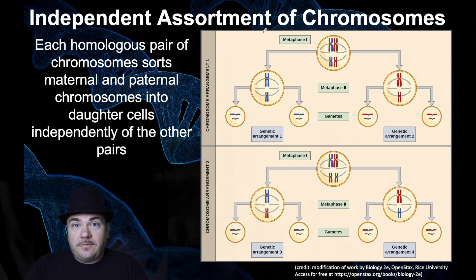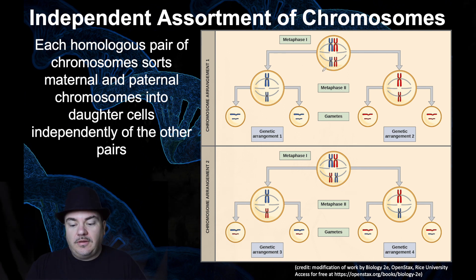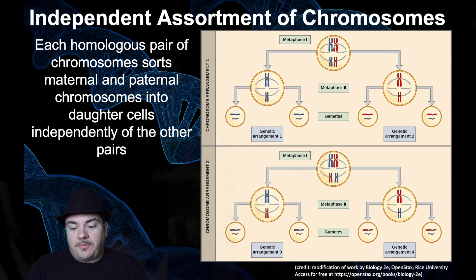Recall from the last video on meiosis that during metaphase one of meiosis one, the chromosomes line up down the middle of the cell, but they line up as homologous pairs — like chromosome one with the other chromosome one, chromosome two with the other chromosome two. So let's say we're looking at an organism — not a human — some organism that only has two types of chromosomes. The blue ones represent the chromosomes they got from their mother, and the red ones represent the chromosomes they got from their father.